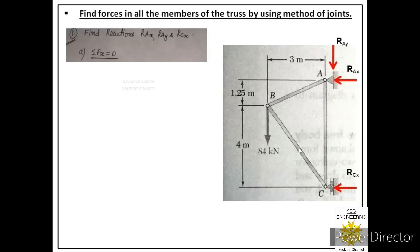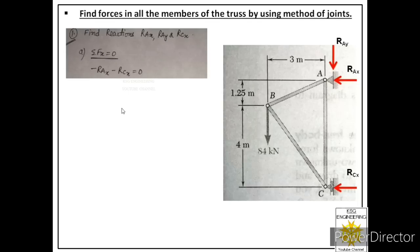Both horizontal forces are acting towards left, so we consider them negative. ΣFx = 0 gives: −RAX − RCX = 0, which means RAX + RCX = 0. We call this equation number one. Since it has two unknowns, we cannot solve it yet, so we move on to the next equation of equilibrium.